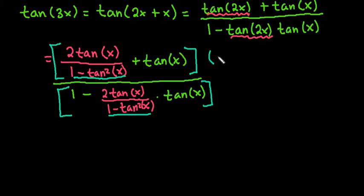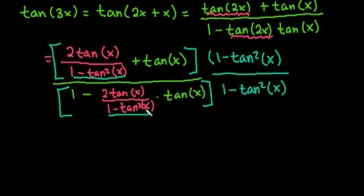So in this case, we are going to multiply everything by 1 minus tangent squared of x. And like I said, we have to do that to both the numerator and the denominator because the only denominator that appears in both the numerator and the denominator is 1 minus tangent squared x.